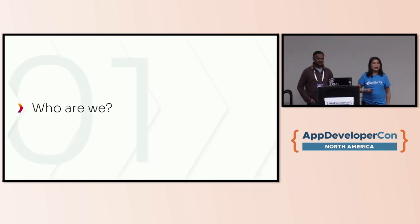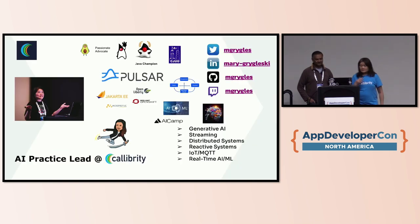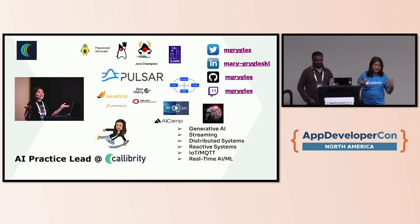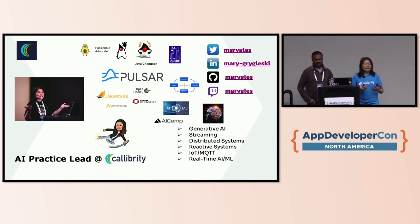First of all, who are we? I'm the AI practice lead at a consulting firm called Caliberty, based in Cincinnati, Ohio, and we help to build custom solutions. My background is 20 years of software engineering — mostly Java and open source — then I became a developer advocate, and now I'm in AI practice doing mostly generative AI work.